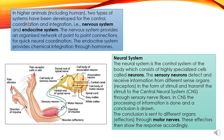In higher animals, two types of systems have been developed for control, coordination, and integration: the nervous system and the endocrine system. The nervous system provides an organized network of point-to-point connections for quick neural coordination through nerves, which are connected to different parts of the body and help in the transmission of impulses. The endocrine system provides chemical integration through hormones. The nerves cannot reach each and every cell, whereas the endocrine glands secrete hormones that are provided to each and every cell of the body.